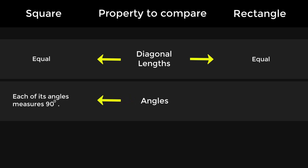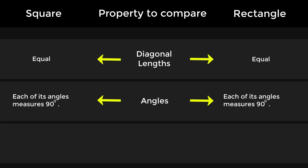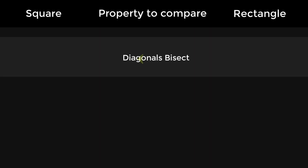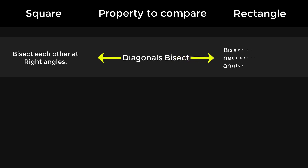Angles of a square: each angle measures 90 degrees. Angles of a rectangle: each angle measures 90 degrees. Adjacent angles of a square are supplementary. Adjacent angles of a rectangle are supplementary. Diagonals of a square bisect each other at right angles.